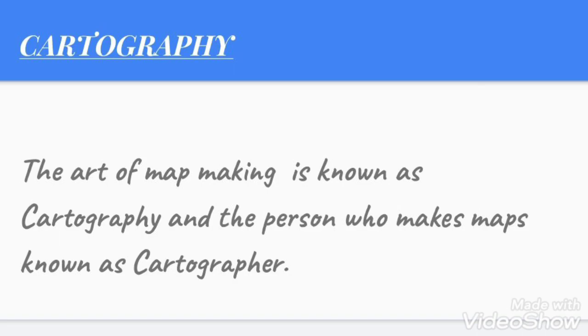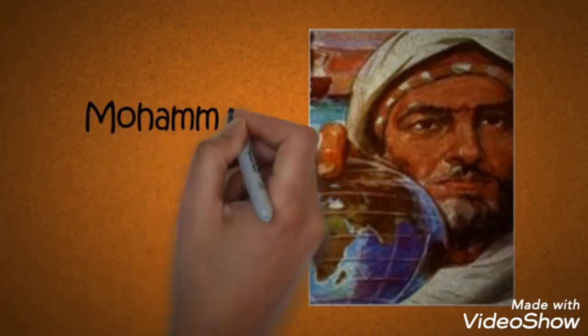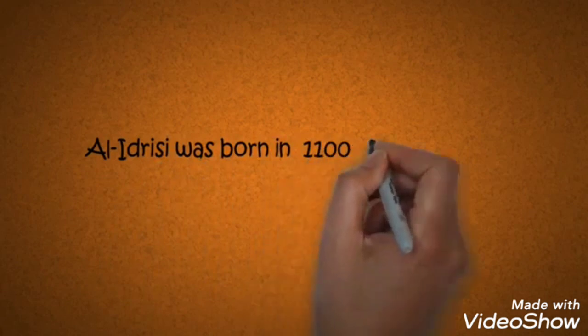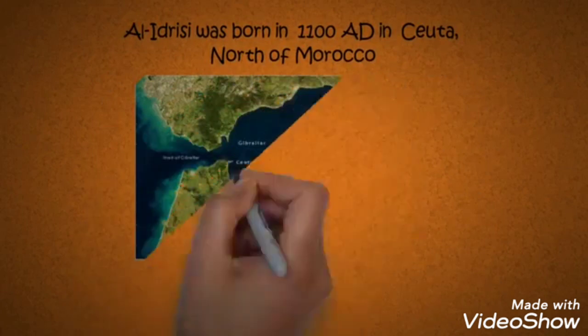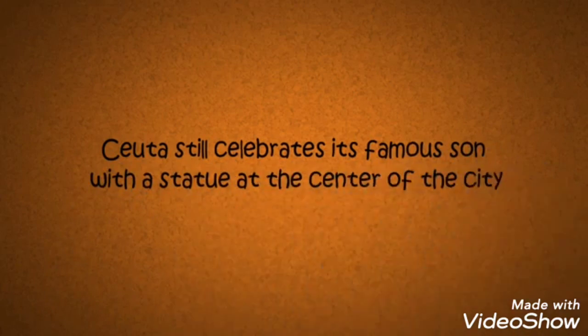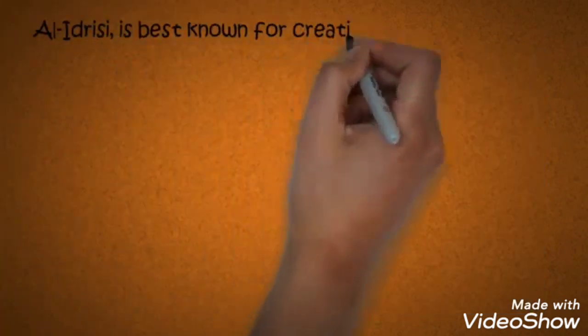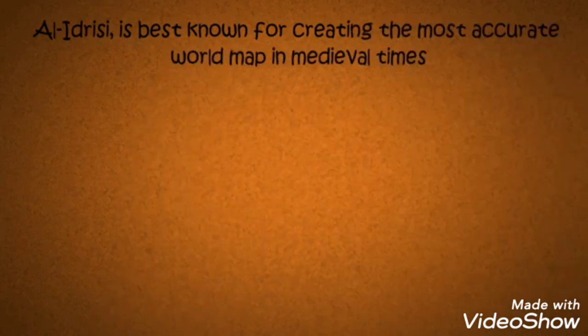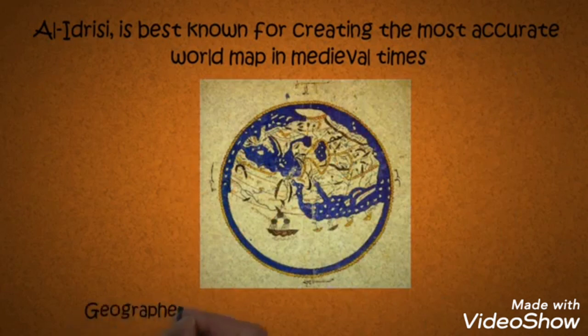The art of map-making is known as cartography, and the person who makes maps is known as a cartographer. Here you can see a video clipping about Muhammad al-Idrissi. Muhammad al-Idrissi was born in 1100 AD in Sata, north of Morocco. Sata still celebrates its famous son with a statue at the center of the city. Al-Idrissi is best known for creating the most accurate world map in medieval times, and geographers around the world used it for centuries.